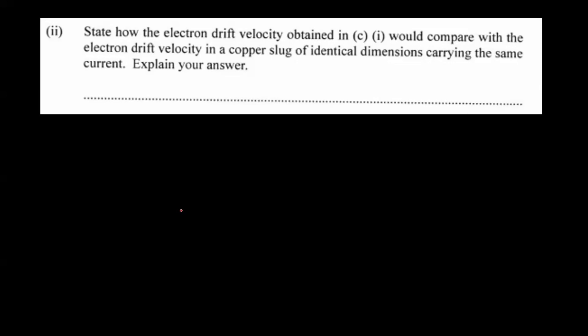In a previous part, we were finding practically the drift velocity of the electrons. Now this question continues and asks us to state how the drift velocity obtained in part (c)(i) would compare with the electron drift velocity in a copper sludge of identical dimensions carrying the same current.